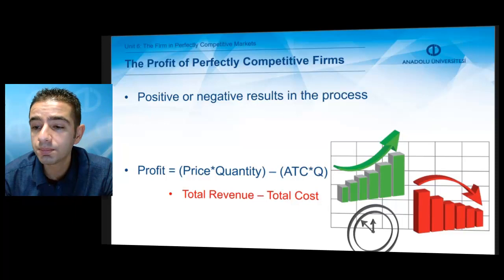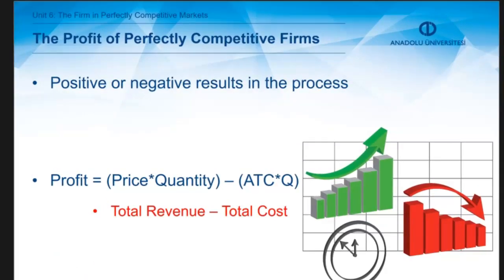In the short run, firms can make a profit or suffer an economic loss. A positive economic profit creates an incentive to enter the market, whereas an economic loss can cause a firm to shut down or exit in the long run. Profit is formalized as total revenue minus total cost, where total revenue equals price times quantity, and total cost equals average total cost times quantity. When price exceeds average total cost, the competitive firm makes positive economic profit.